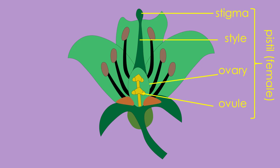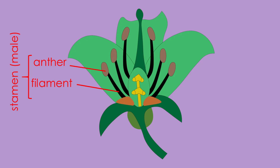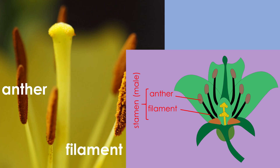The stamen is the male reproductive organ of a flower, responsible for producing and releasing pollen. It consists of two main parts. Anther: the top part of the stamen where pollen is produced and stored in sacks called pollen sacks. Filament: the slender stalk-like part that supports the anther and positions it for optimum pollen dispersal.